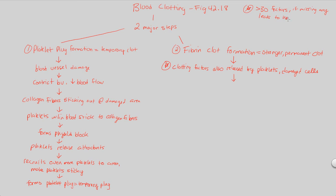Hemophilia is usually a genetic disease. For example, those who suffer from hemophilia A are missing the specific clotting factor known as clotting factor 7 (CF7). That's an important clinical note. If you have all 30 clotting factors, they will trigger the conversion of prothrombin to thrombin.